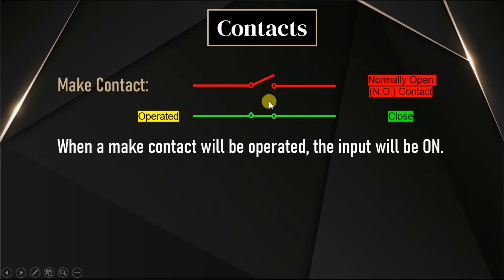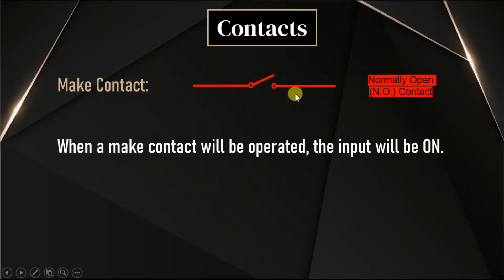The contact is going to close, then only the status of the switch will change. The default state of the switch in this case is open. The default state is also termed as normally open, or NO contact. 'Normally' means the default state of the switch. Whenever the switch is activated, that state will change — if the state is open, it will change to close; if the state is off, it will be on.